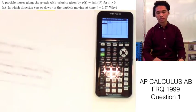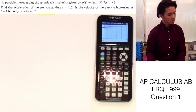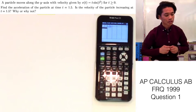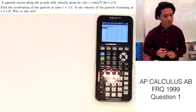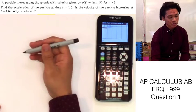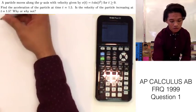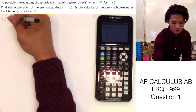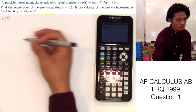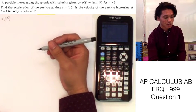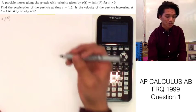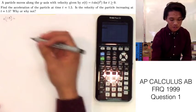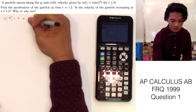Let's move on to Part B. Part B is asking: find the acceleration of the particle at time t equals 1.5. Is the velocity of the particle increasing at t equals 1.5, and why or why not? For this, we need to find our acceleration at 1.5. That's just a fancy way of asking whether the acceleration at this point is positive or negative.